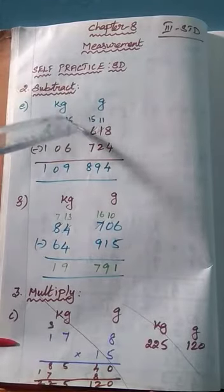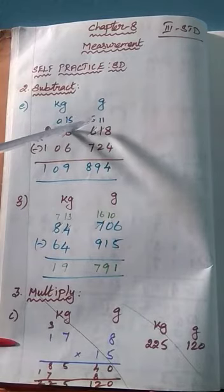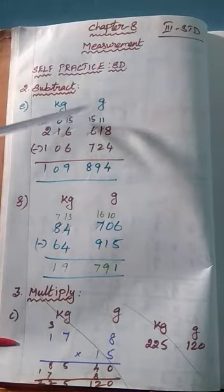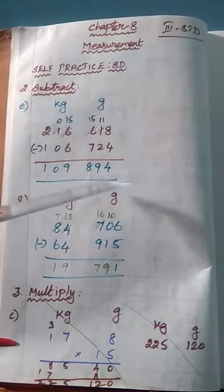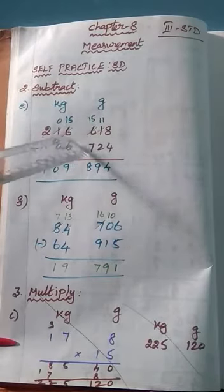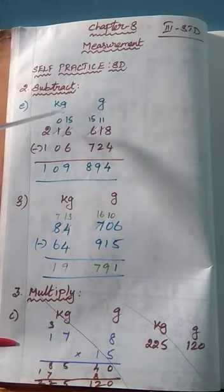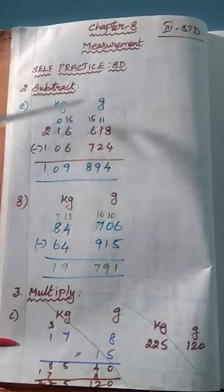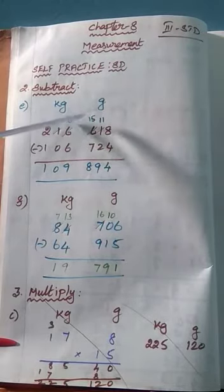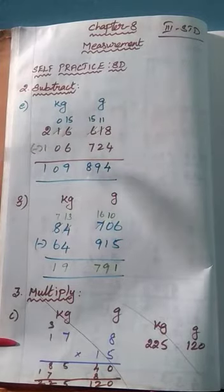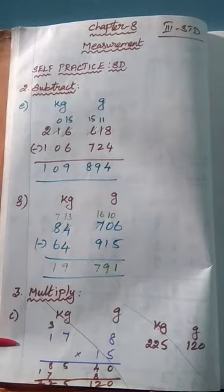You can't subtract, so again you have to borrow 1 from the neighbor number 6. If you take away 1 from 6, it becomes 5. This 5 becomes 15. 15 minus 7 is 8. Then here also, down 6 is there, so you can't subtract. Again borrow 1 from the neighbor number 1 — 1 becomes 0, so it becomes 15. 15 minus 6 is 9. Then 0 minus 0 is 0, and 2 minus 1 is 1. So your answer is 109 kg, 894 gram.